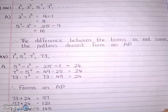Next, 14th question: 1², 3², 5², 7². Calculate the squares first: 1, 9, 25, 49. Then subtract: 3² − 1² = 9 − 1 = 8. 5² − 3² = 25 − 9 = 16. The difference between the first and second answers is not the same, so the pattern does not form an AP.